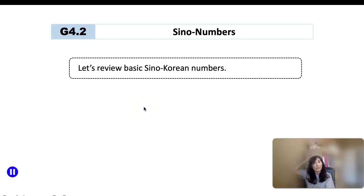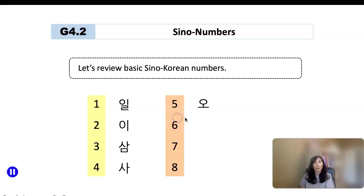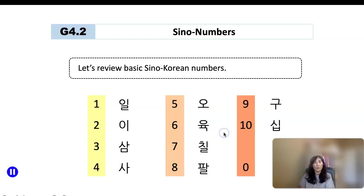First of all, let's review basic Sino-Korean numbers from 1 to 10 and 0: 일, 이, 삼, 사, 오, 육, 칠, 팔, 구, 십, and 0 is 영 or 공.